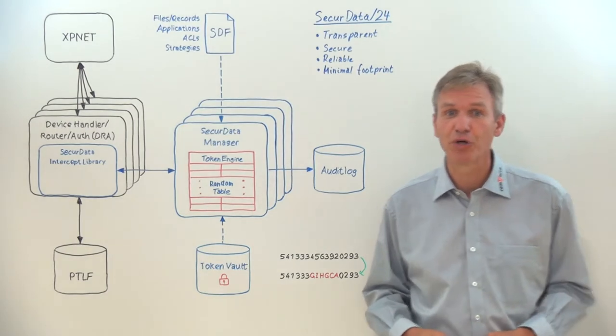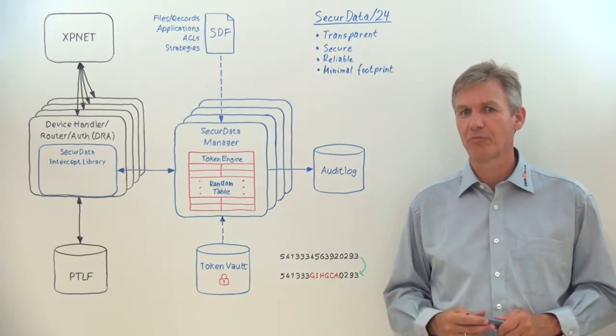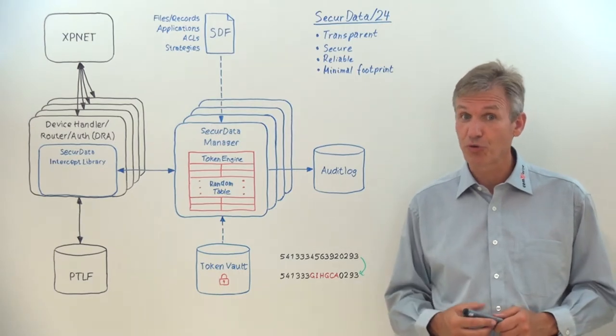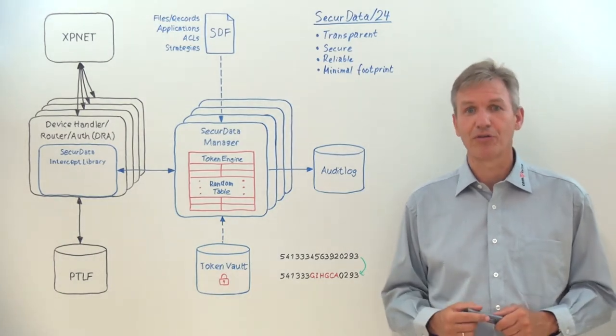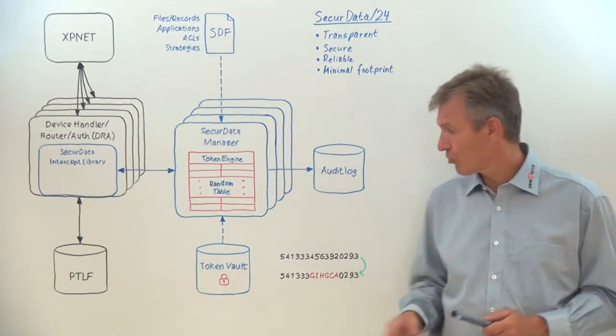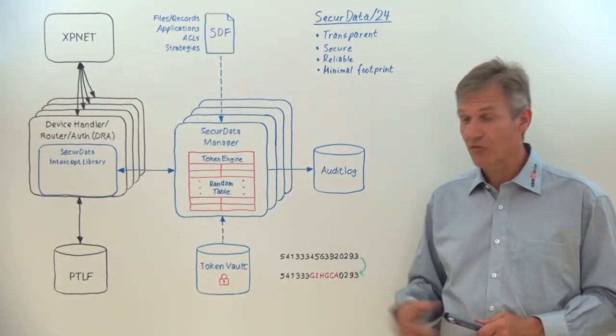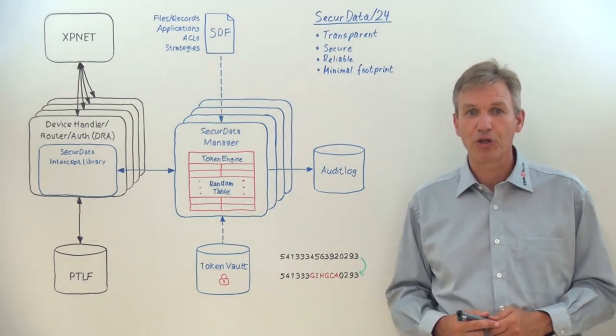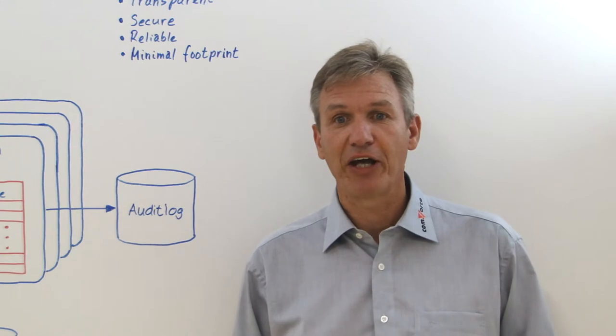SecureData has a built-in token engine using a patent-pending algorithm producing the token for a PAN using a huge array of random data. And that random data is used to associate every possible PAN with a unique token. The random data will be pre-generated during the system initialization and will be stored and encrypted into the so-called token vault. The complete random data is loaded from the vault into the memory of SecureData. So, no IOs are happening during processing. And that is actually the big advantage of the SecureData tokenization scheme. It is completely stateless.